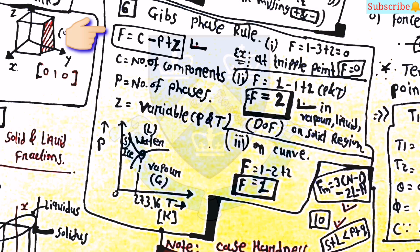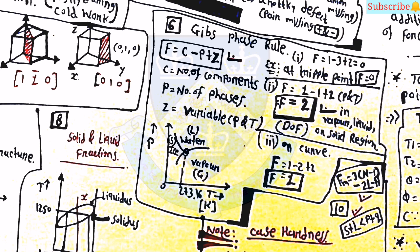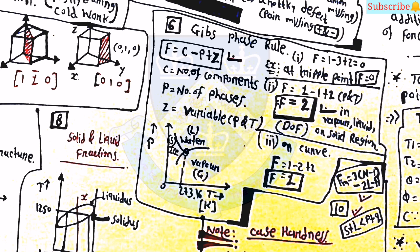One more important concept from material science is the Gibbs phase rule. The equation is: F equals C minus P plus Z, where C is the number of components, P is the number of phases, and Z is the number of variables (pressure and temperature). For example, at the triple point: F equals 1 minus 3 plus 2 equals 0 — one component (water), three phases, two variables. In the vapor, liquid, or solid single-phase region, F equals 2. On a two-phase boundary curve, F equals 1.